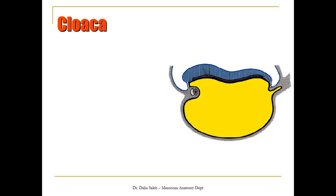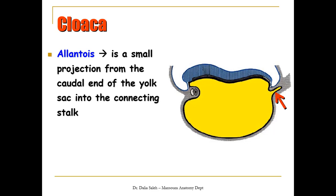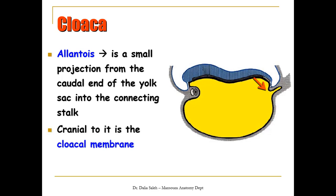To understand how the cloaca develops, in this section of the gestational sac you can see the neural tube, the amniotic cavity, and the yolk sac cavity. This is the cranial end of the embryo and this is the caudal end, where it is attached to the placenta by the connecting stalk. The cloaca develops by the appearance of a diverticulum called the allantois, a small projection from the caudal end of the yolk sac. This diverticulum projects into the connecting stalk. Cranial to the allantois lies the cloacal membrane, formed by adherence of two layers: the ectoderm and the endoderm.